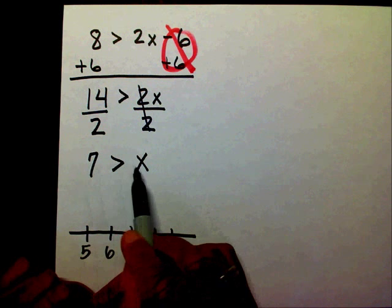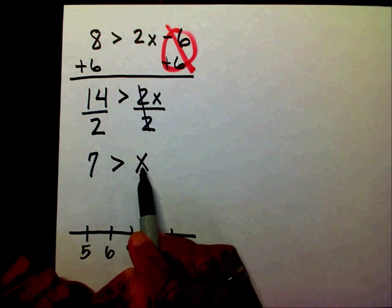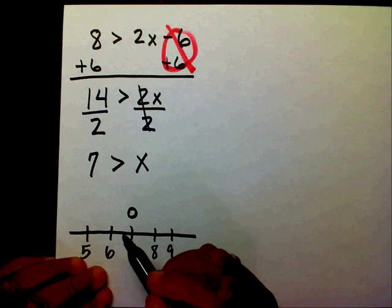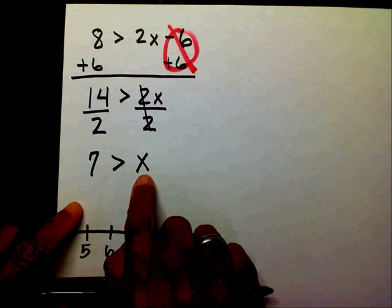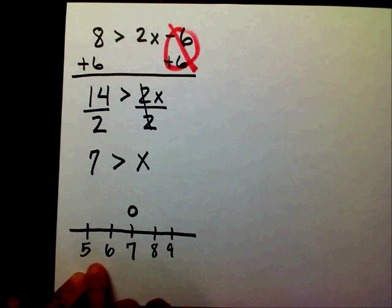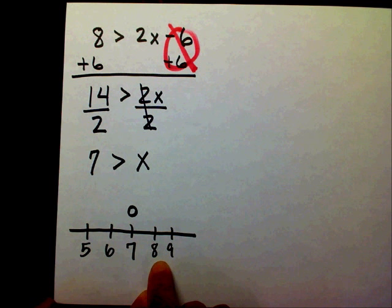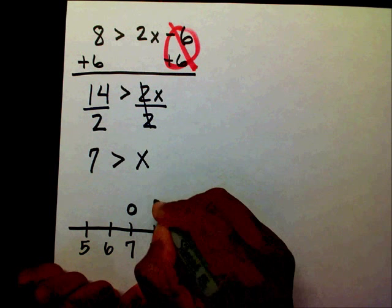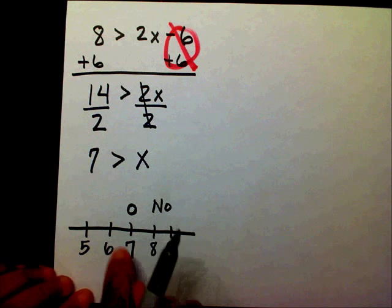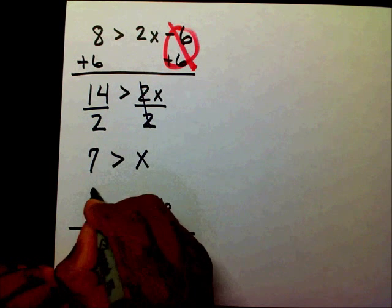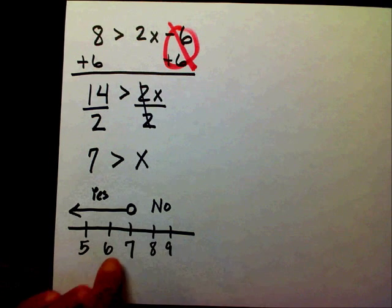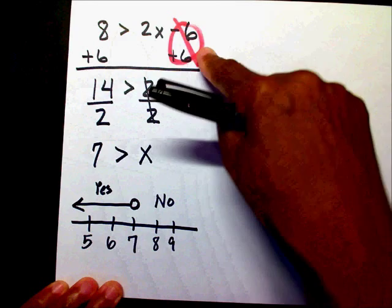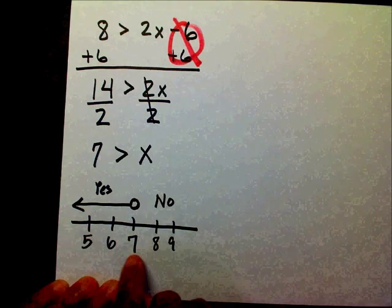Is 7 included? Is 7 greater than 7? No. So since 7 is not included, I'm going to draw an open circle. Is 7 greater than 8 and 9? No. Is 7 greater than these numbers to the left? Yes. So all these numbers to the left of 7 will make this true — but not including 7.